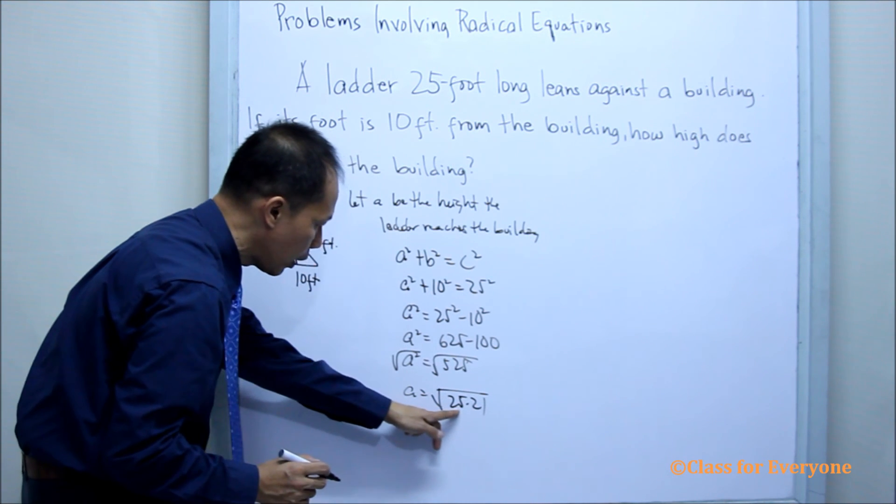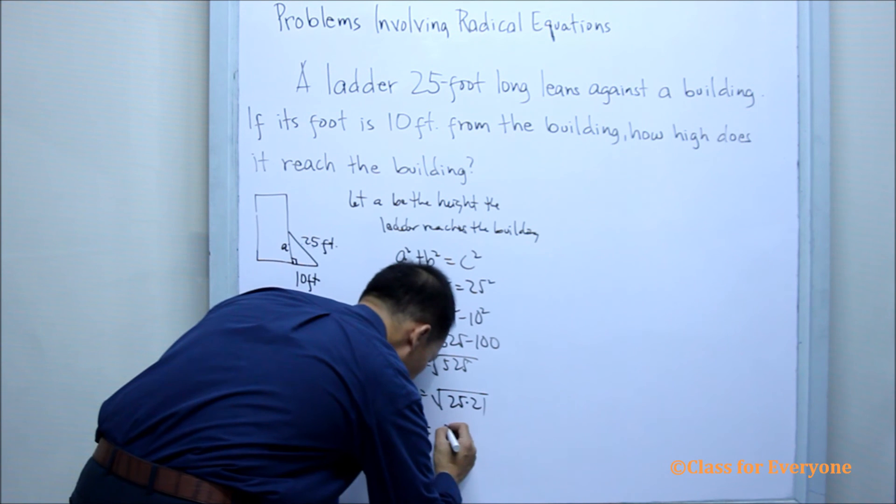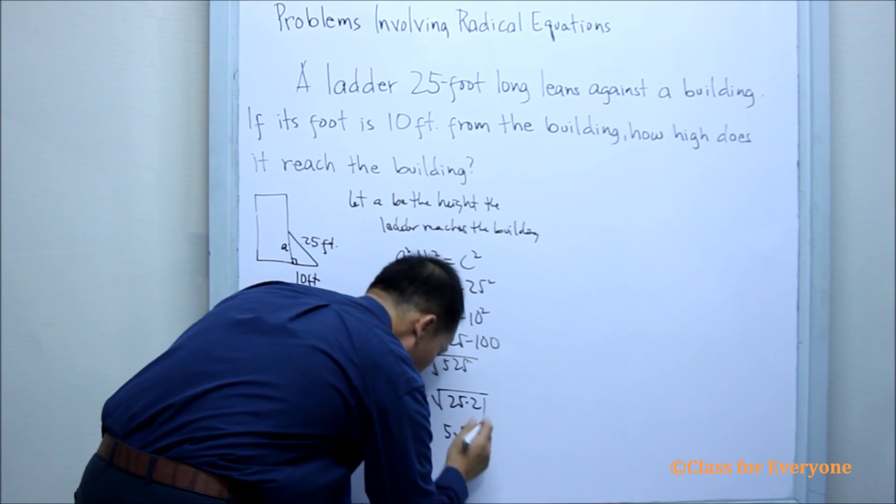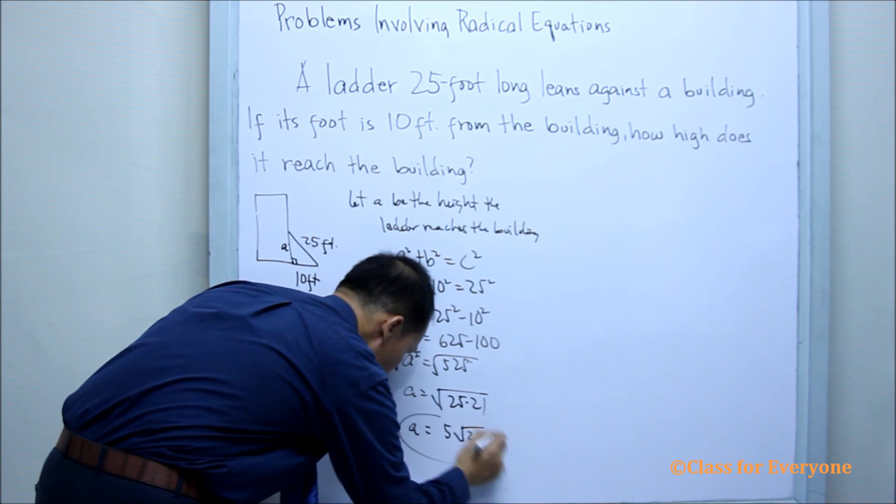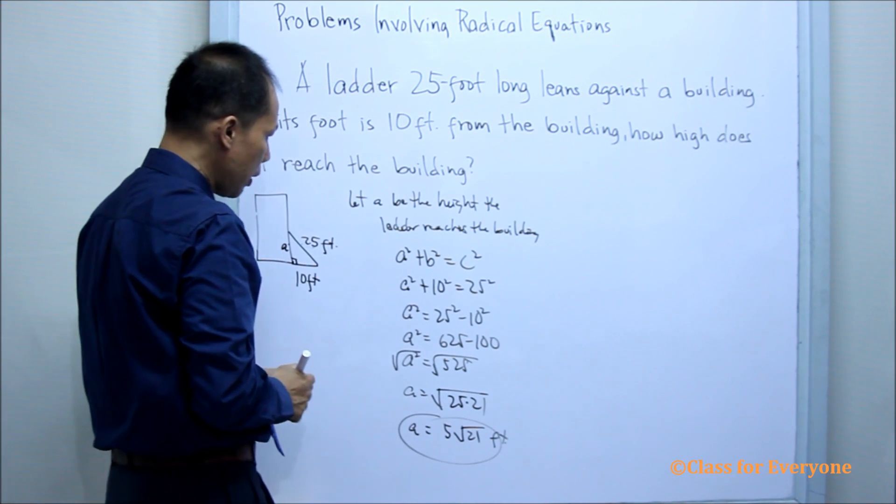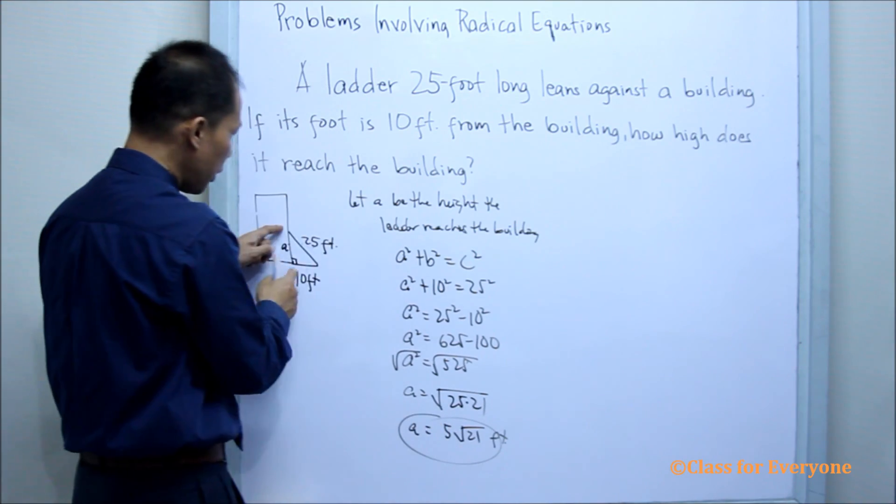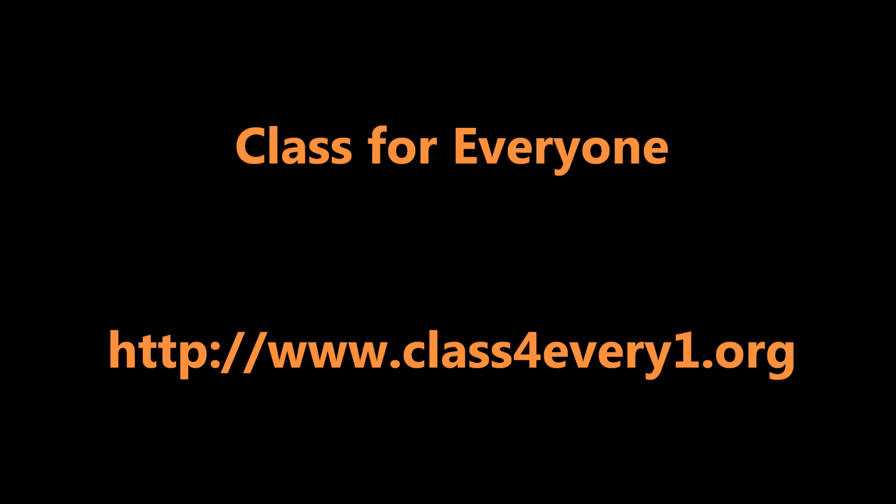Since 25 is already a perfect square, we can now get the square root of 25, which is 5. 21 is not a perfect square, so that is 21. And this is in terms of feet. This is the height the ladder reaches the building.